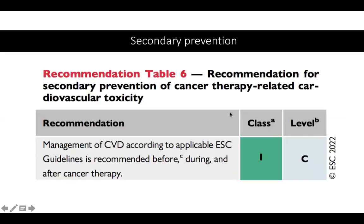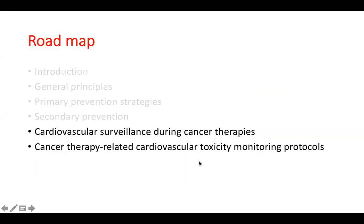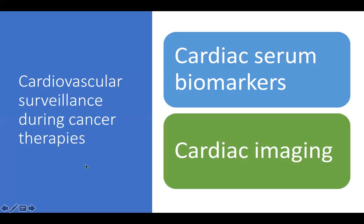In secondary prevention, the guideline recommends managing the patient's cardiovascular disease according to applicable ESC guidelines before, during, and after cancer therapy. For cardiovascular surveillance during cancer therapies, as seen in all the coming protocols, we will use one of two methods: cardiac serum biomarkers — either troponin or natriuretic peptides — and cardiac imaging with transthoracic echocardiography, including global longitudinal strain assessment and cardiac MRI.